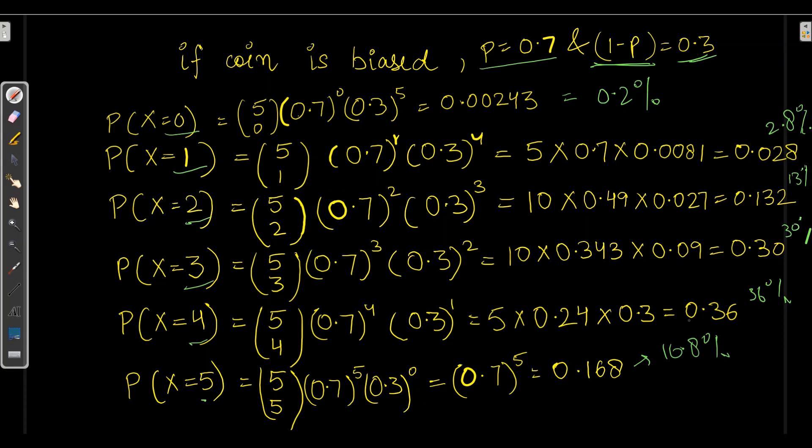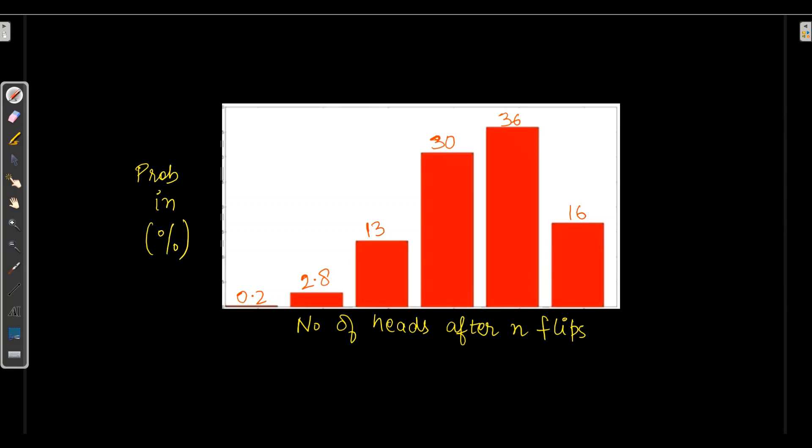Let's find out by plotting the graph which is somewhat like this. Where on Y-axis, probability of heads in percentage and on X-axis, it is number of heads after N flips. But it is not at all following the same curve.